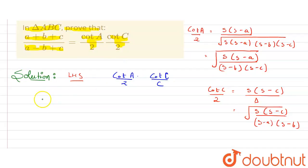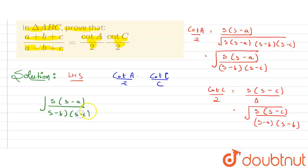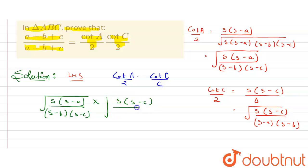Substituting back: cot(A/2) is the square root of s(s - a) divided by (s - b)(s - c), multiplied by cot(C/2), which is the square root of s(s - c) divided by (s - a)(s - b).